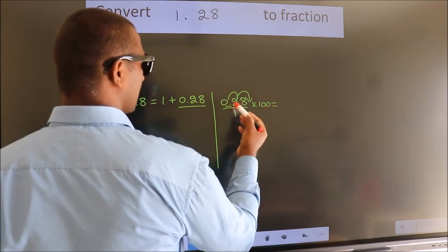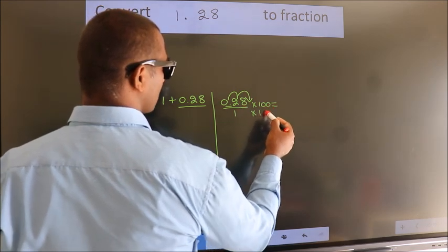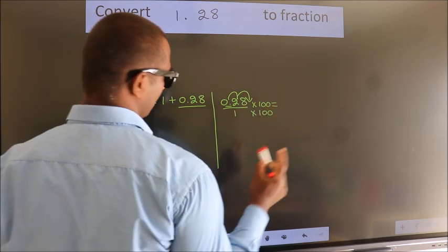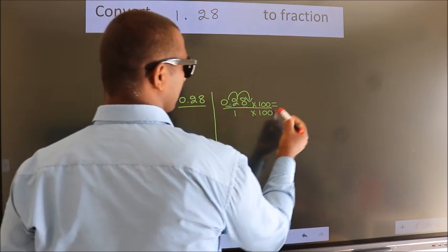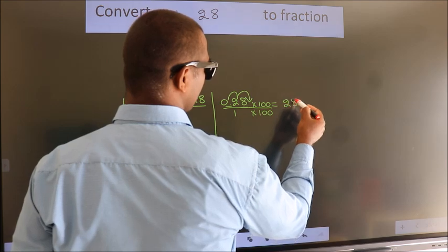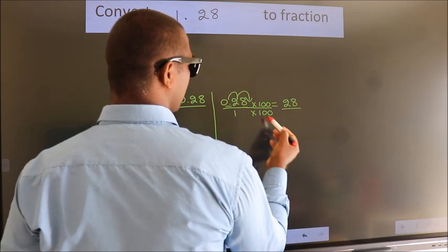Whatever you are multiplying in the numerator, in the denominator also do the same. Next, 0.28 into 100 gives 28. 1 into 100 gives 100.